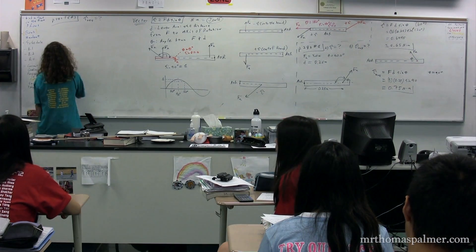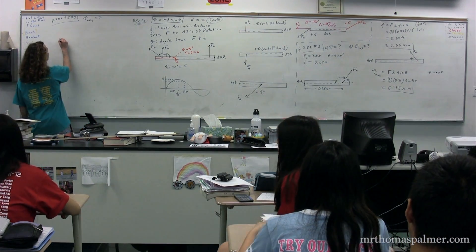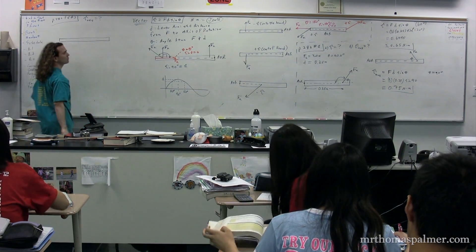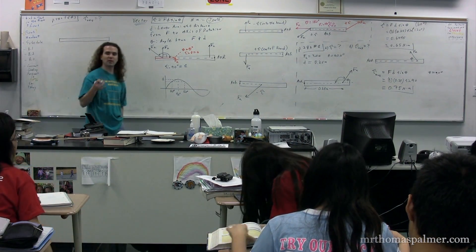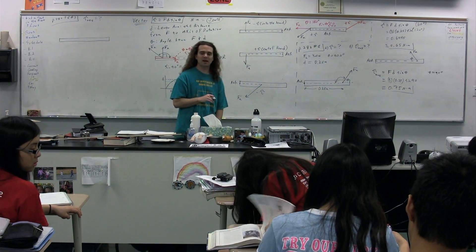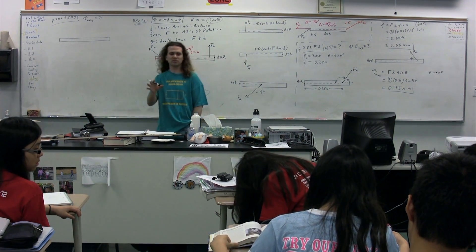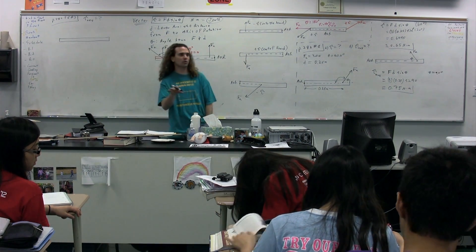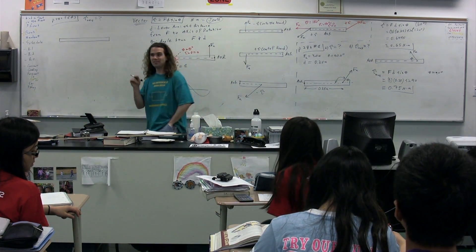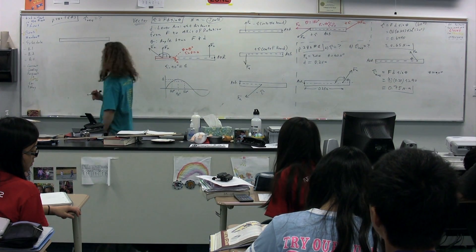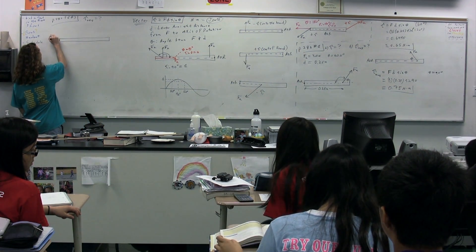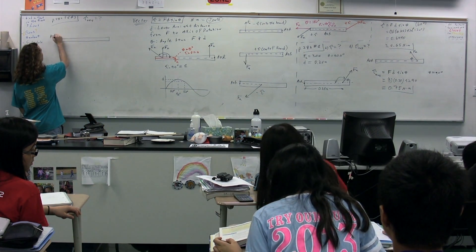I'll draw a picture on the board. From left to right, I'm going to label the forces force 1, force 2, and force 3. It may not be entirely clear, but I believe there's a point O in the picture — that is on the far left, and that is the axis of rotation. So the axis of rotation is right here.